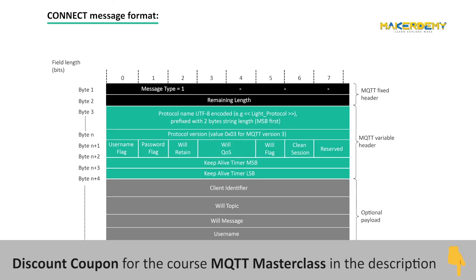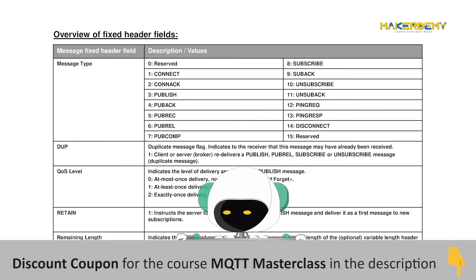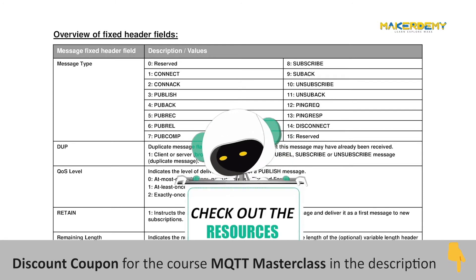First is the CONNECT packet. CONNECT is a request packet that is first sent by a client to the broker after the TCP connection establishment. Only when the TCP connection handshake is completed and the connection is established will an MQTT client send a CONNECT packet to the broker. In-depth details of the CONNECT packet can be found in tabular form in the resources of this video.